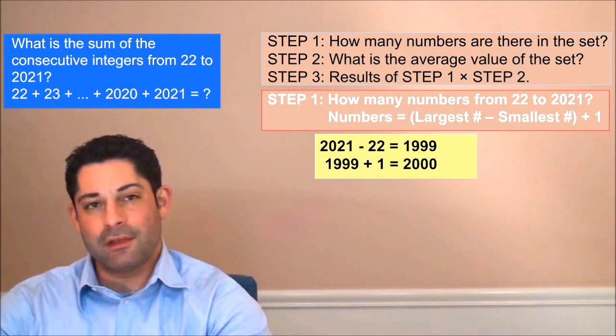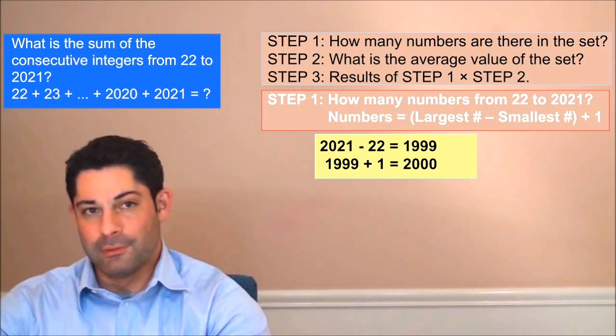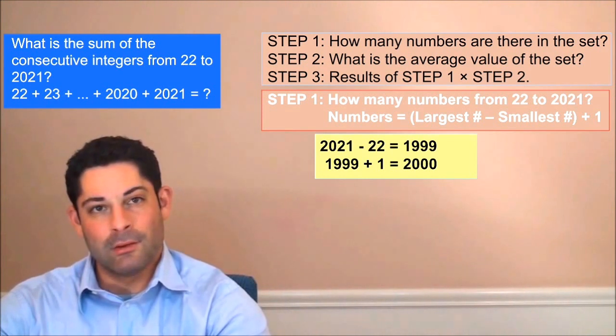So we have 2,021 minus 22 equals 1,999 plus 1 or 2,000. So we have 2,000 integers.